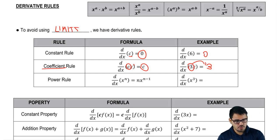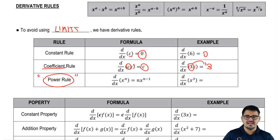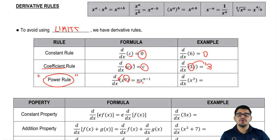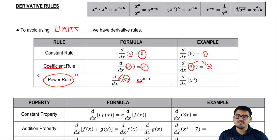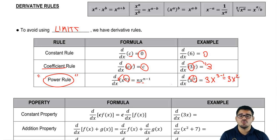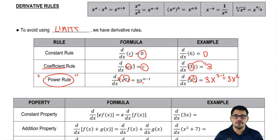Now we're going to go into the power rule, which is the most important rule of this section. When we have polynomials with different x's and different powers, we find the derivative of x^n by bringing that n forward — so we have n times x — and then subtracting one from the exponent, giving n minus 1 as our new exponent. For example, the derivative of x³: bring the 3 forward, so it's 3 times x, then subtract 1 from 3 to get 3x². That was our first three rules — no more long limits.